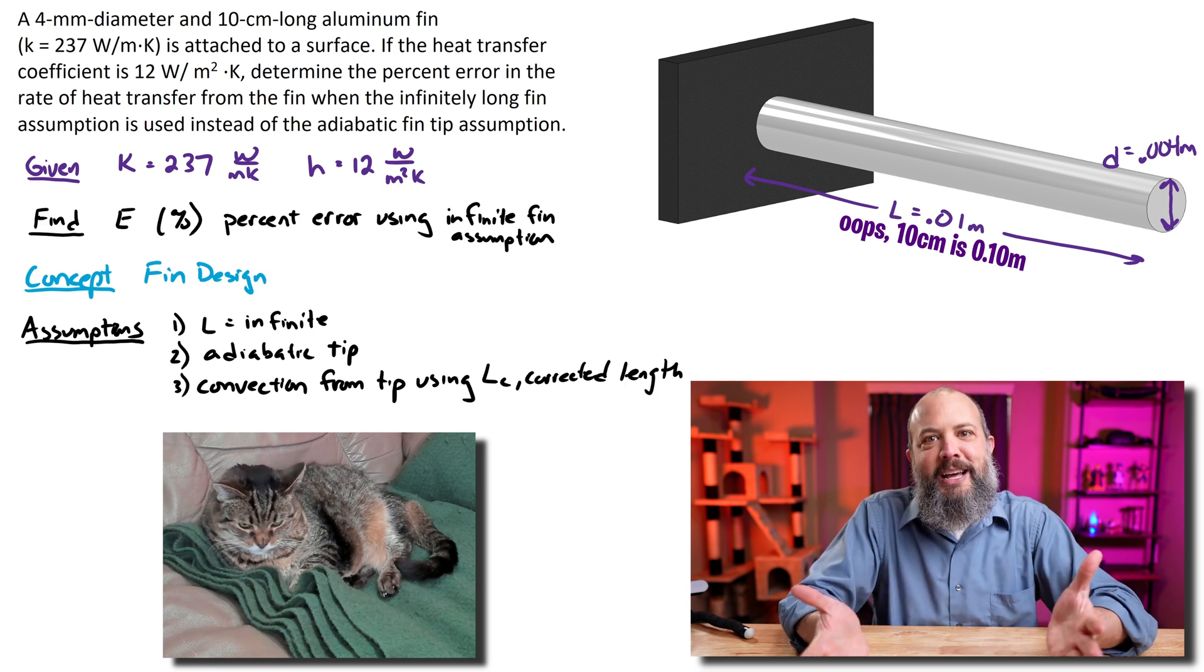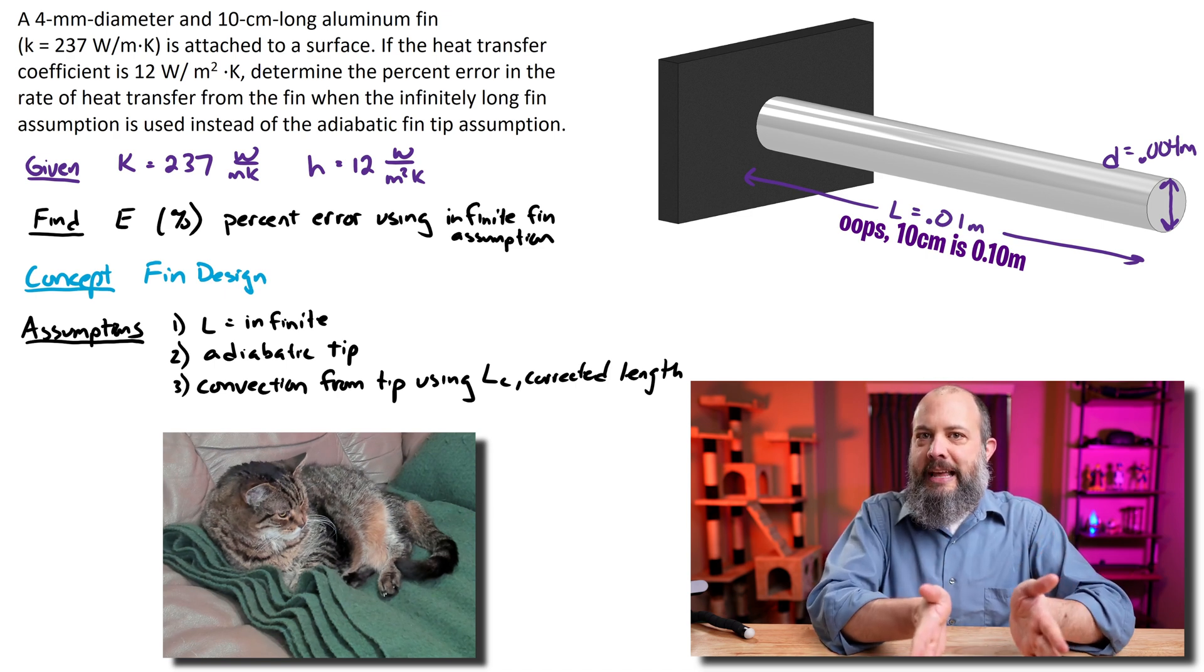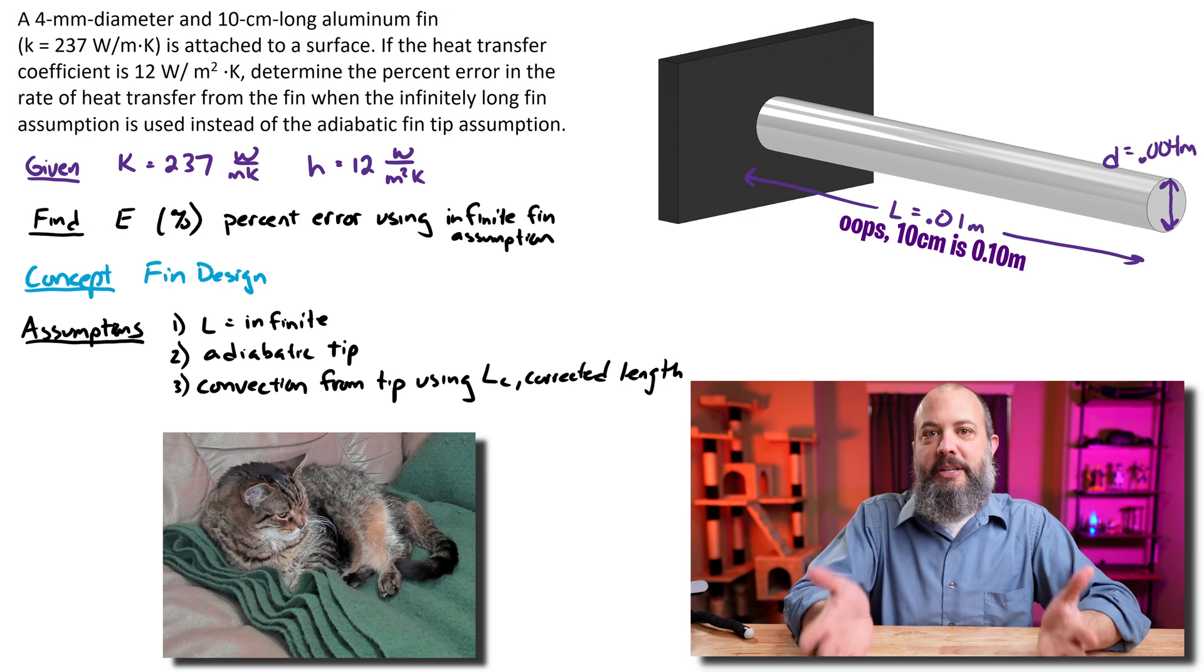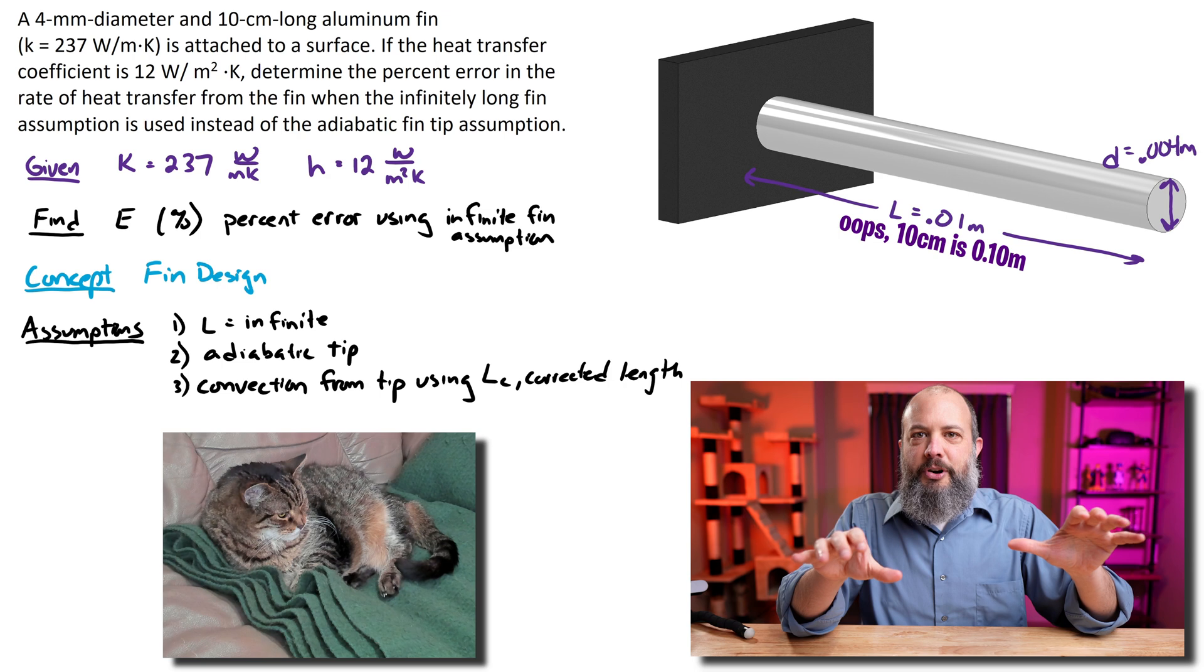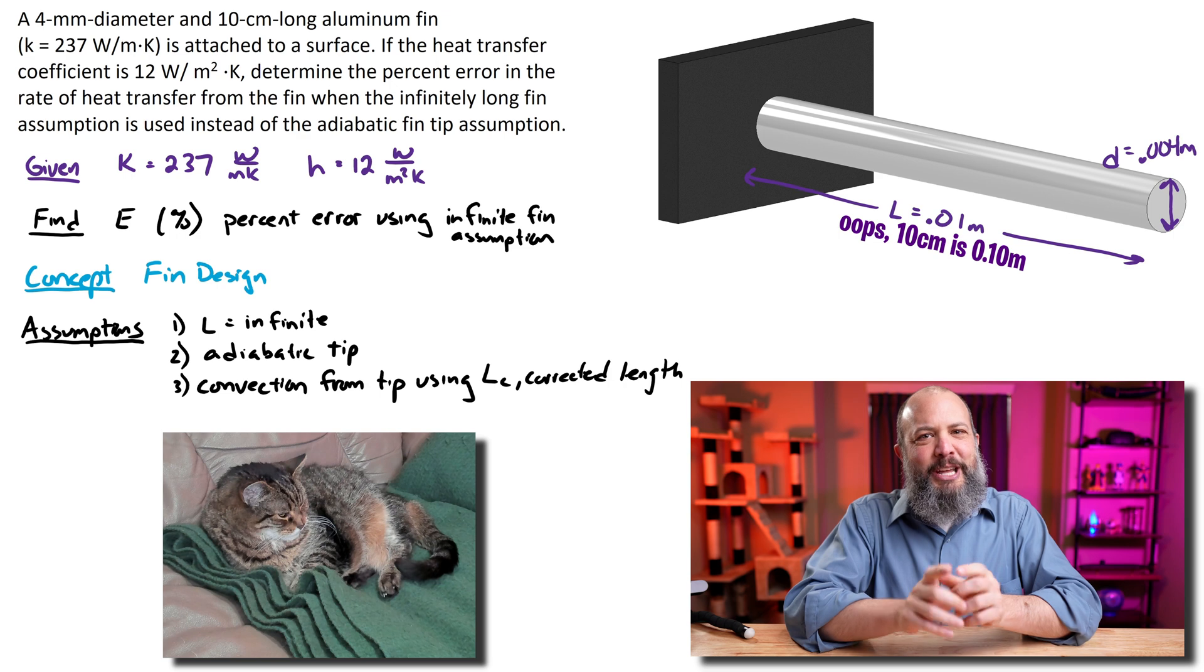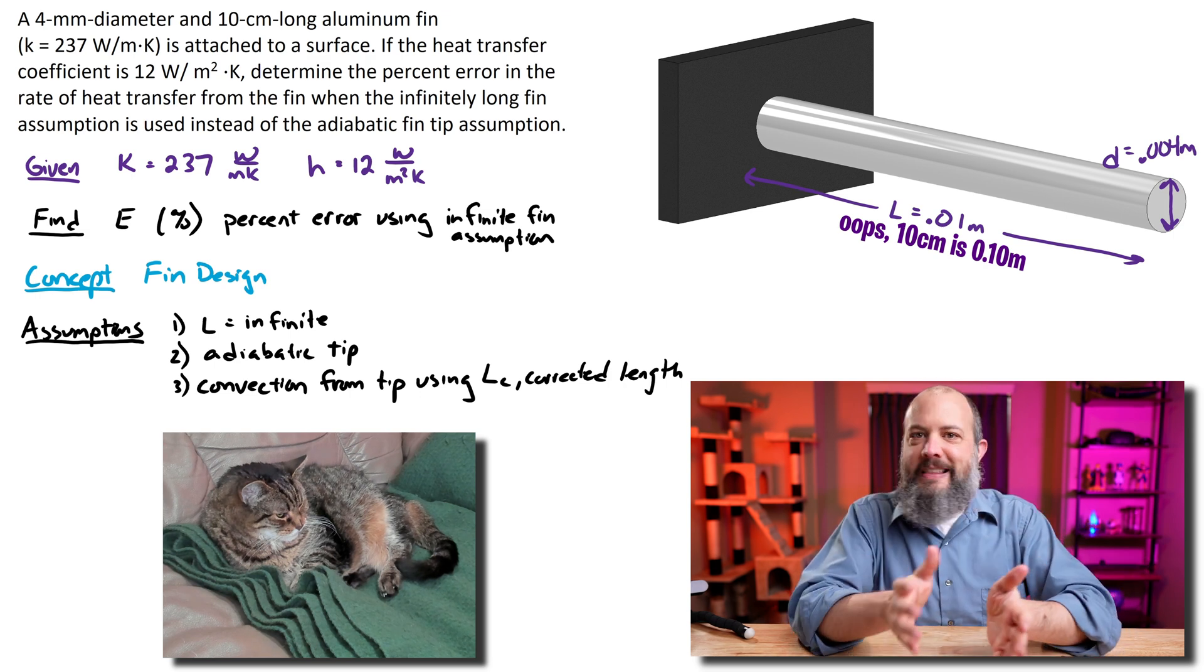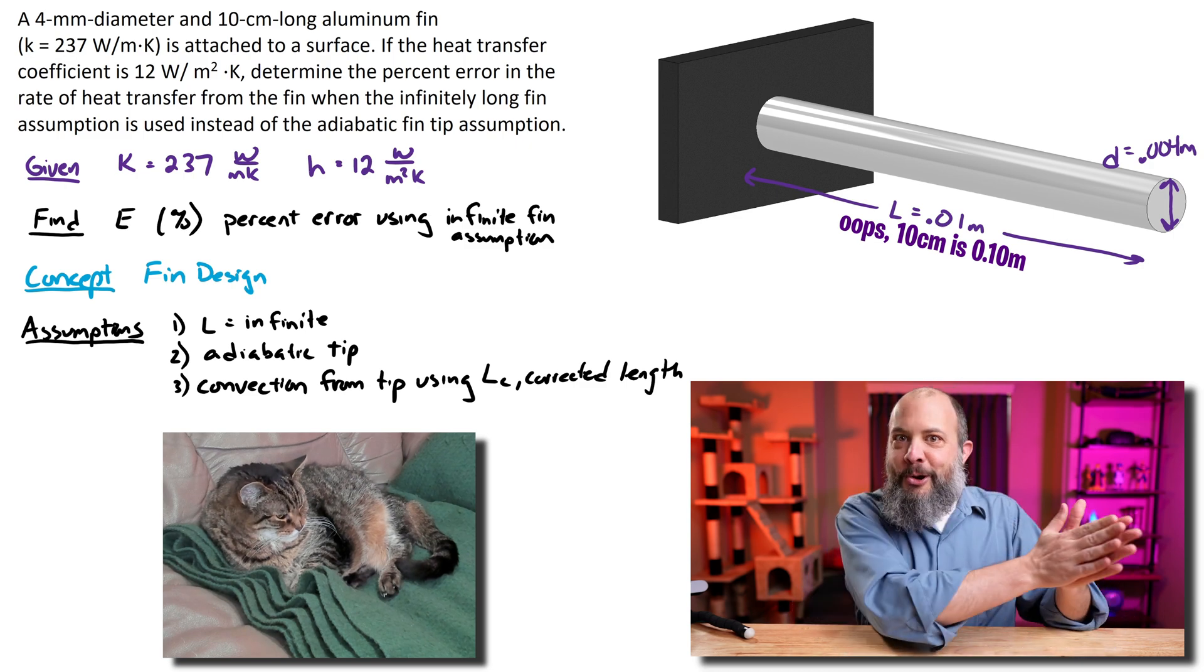The next best assumption, a way to correct that, is to use the actual length but to ignore heat transfer through the tip, the adiabatic tip assumption, also called the insulated tip assumption. This is because for this cylindrical tip, we're worried about convection off the sides. It makes the problem a lot easier if we can just include the sides, if we ignore what's happening at the circular cross-section on the end. So this will be a more accurate answer than the infinite length assumption. But of course, it's still definitely not perfect because we're ignoring what happens at the tip.